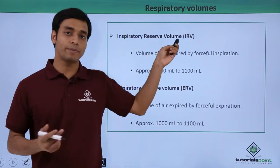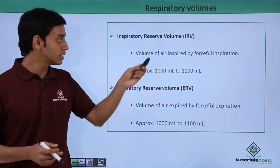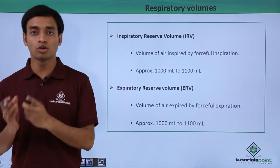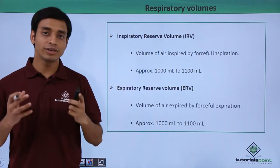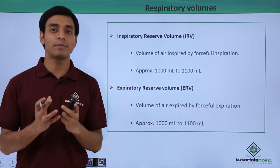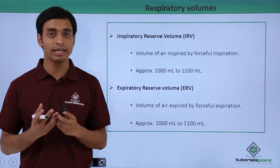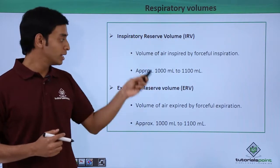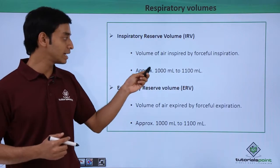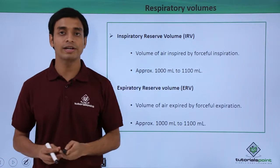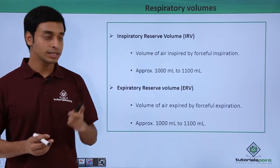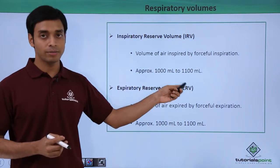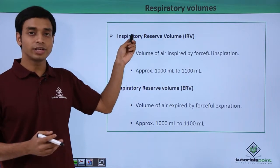IRV is basically the volume of air that can be inspired by a forceful inspiration. If we try to forcefully inhale air, the amount or volume of air that can be inhaled is known as IRV or inspiratory reserve volume. This is approximately calculated as 1000 ml to 1100 milliliters of air.